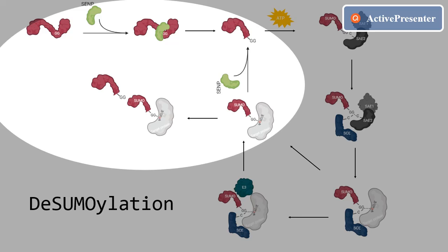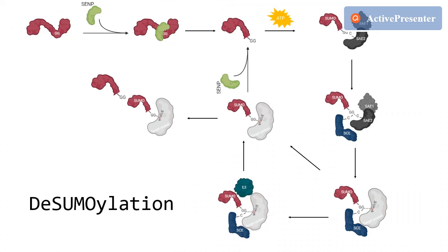In mammals, the homologues for the ULPs are sentrin-specific proteases, or SENPs, which have been found along with another class of SUMO proteases. In plants, several ubiquitin-like proteases have been found, and the hypothesis of plants having another class or family of proteases has been brought forward. In number, the proteases surpass the E3 ligases and even the SUMO conjugating enzymes combined, which suggests that desumoylation might be an even more specific process than sumoylation itself.